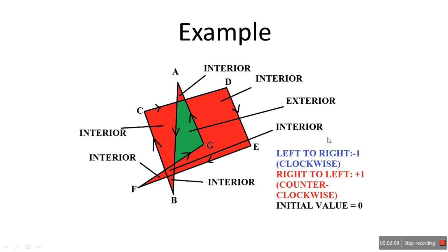So just remember this: left to right means clockwise. For left to right, or clockwise, we subtract one. For right to left, that is counterclockwise, we do plus one. Counterclockwise is right to left. And the initial value of the winding number, as we have seen, is zero.